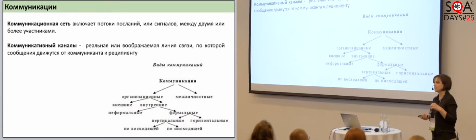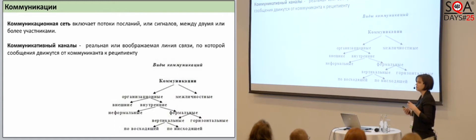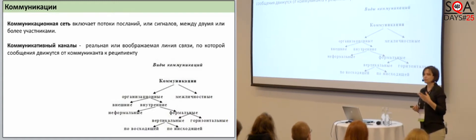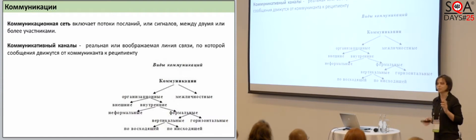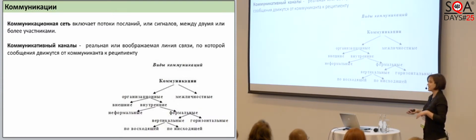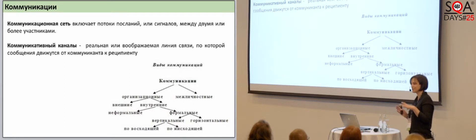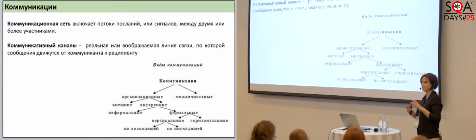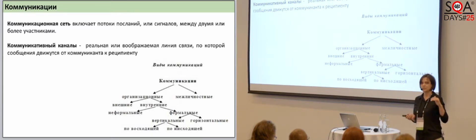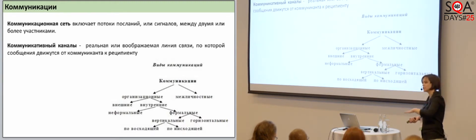Informal communication appears because formal communication doesn't work. If you look it up, they often use the term grapevine — spreading information by grapevine. And when you control it, it's great because you can throw something in and it might play to your benefit. Formal communication can be vertical and horizontal, or ascending and descending — from boss to employee.